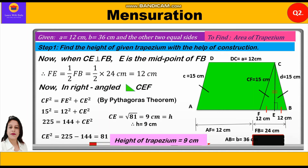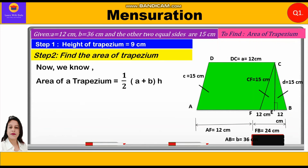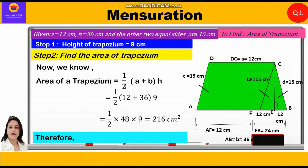Now in Step 2 we find the area of the trapezium. Area = half into (A + B) into height. Substituting: half into (12 + 36) into 9 = half into 48 into 9 = 216 cm square. Therefore the area of the trapezium is 216 cm square. So this is how we calculated the area when the height was not directly given — first we found the height as 9 cm, then calculated the area.